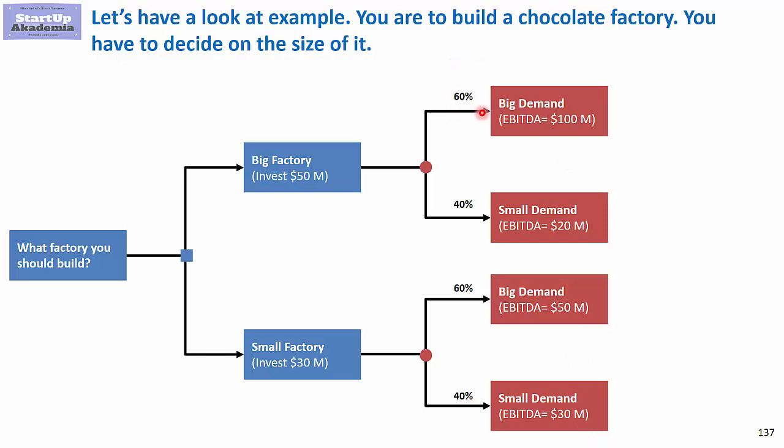We also put the probability of each and every scenario. The big demand is 60% and the small demand is 40%.